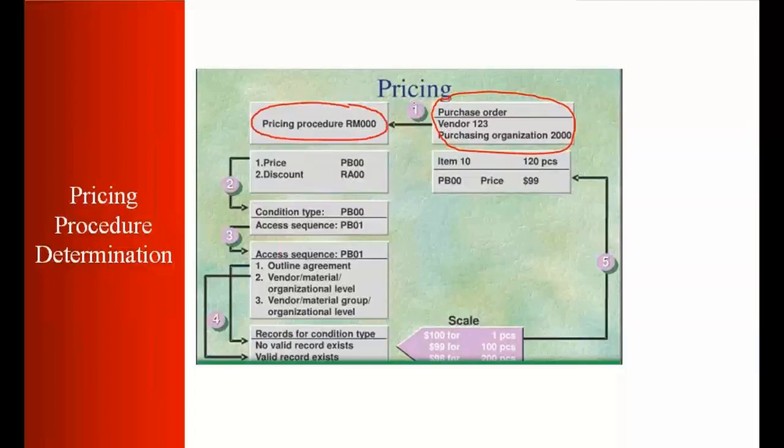First of all, this is the first step that it will be reading the pricing procedure. So it will find that this is the right pricing procedure I need to consider. Then second step will be, it will be reading the condition types. So these are the condition types. What is the price? What is the discount? What is the freight? What is the shipping cost? It will read all the conditions.